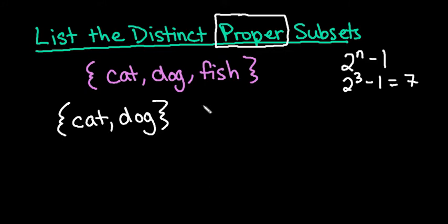So the next one that we could form is cat and fish. And then the last pair that we can do that we haven't done yet is dog and fish.